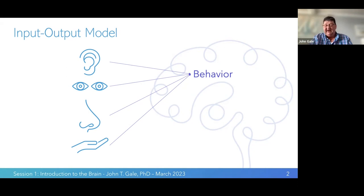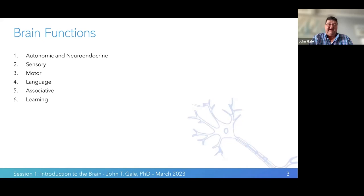The brain does pretty much everything. It controls our autonomic and neuroendocrine system; it's involved in sensory perception, motor output, language, our ability to associate various environmental cues, and learning of many different types — it could be learning to pick up a cup, for instance. The brain is doing this constantly and all the time, and it's not segmented — it's a continuous process.